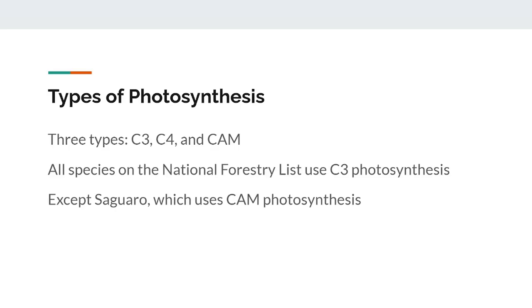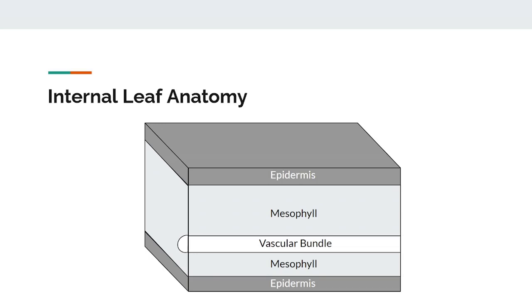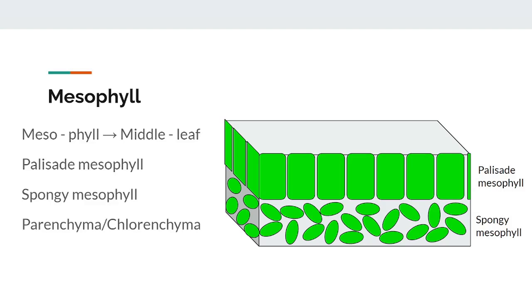Here we have our leaf sandwich again. Let's start building this image from scratch, starting with the mesophyll. It is important to note that we will be modeling the structure of a dicot leaf, which is a type of angiosperm leaf. Later on, I will cover the internal differences between a monocot and dicot leaf. The word mesophyll can be broken down into 'meso', meaning middle, and 'phyll', meaning leaf, combined to form 'middle leaf'. This is fitting since the mesophyll is the layer of cells in the middle of the leaf.